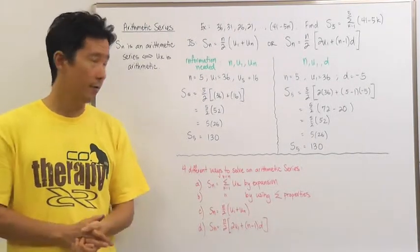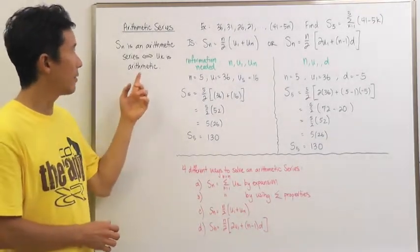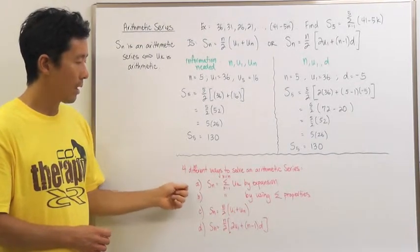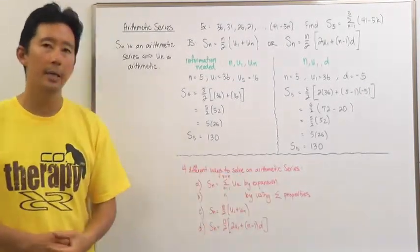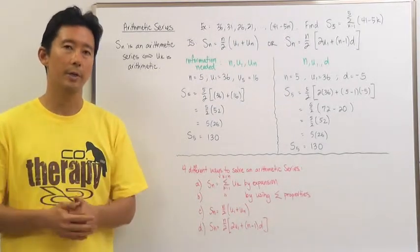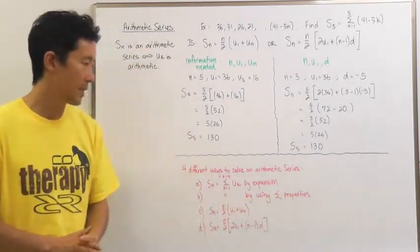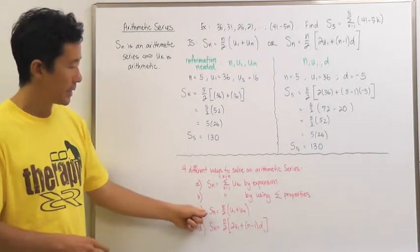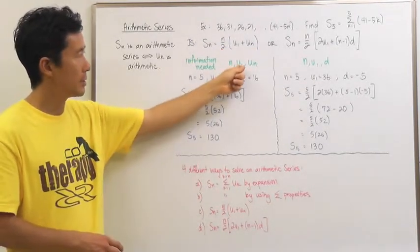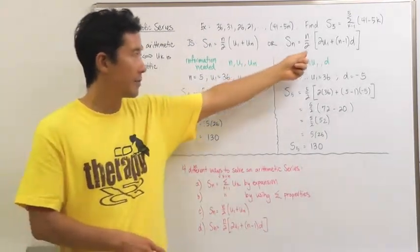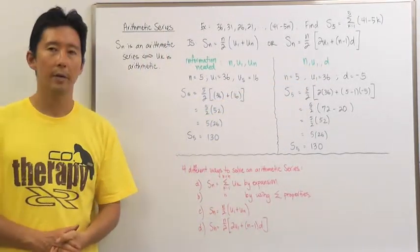Basically, to calculate the arithmetic series I have four different ways. First, I can use sigma notation and expand by finding all the individual terms and adding them together. Second, I can use sigma notation properties as in previous exercises. Third, I can use the formula S sub N equals N over 2 times (U sub 1 plus U sub N), needing N, U sub 1, and U sub N. Fourth, I can use S sub N equals N over 2 times (2 U sub 1 plus (N-1)D), needing N, U sub 1, and D.